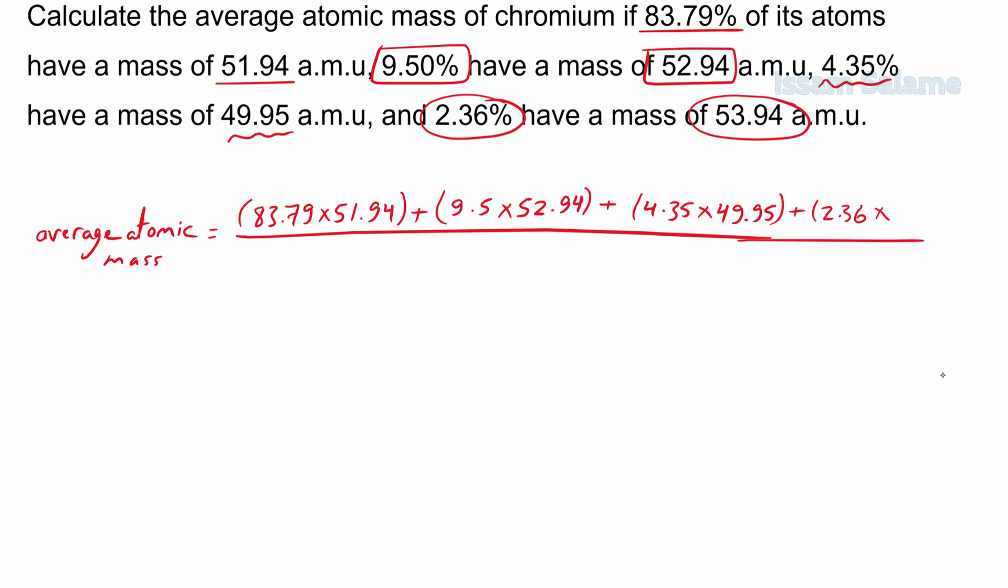The answer is going to be 51.995635. If you want to take two decimals, we round it to 52 amu. And that's it for finding the average atomic mass for different atoms. I hope that you find it easy.